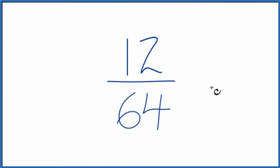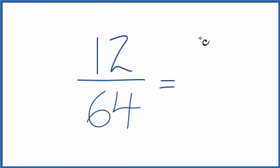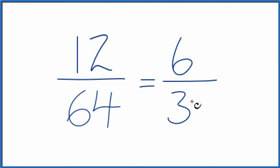So we could find a common factor, but I think with this one, I know that 12 doesn't go evenly into 64. I think I'll just divide the numerator and denominator by 2 since they're even numbers, and that would give me 6 over 32.